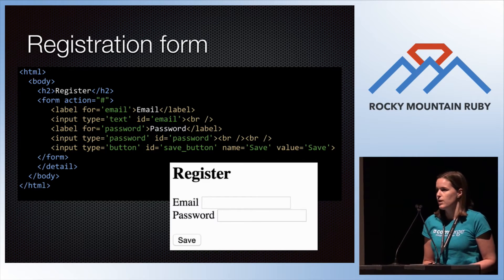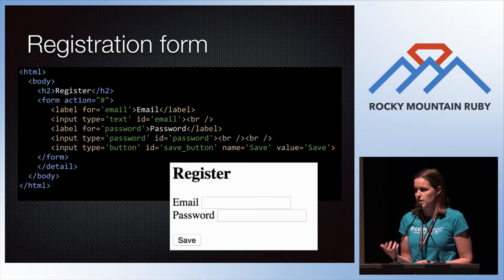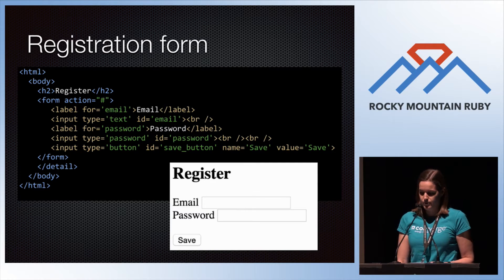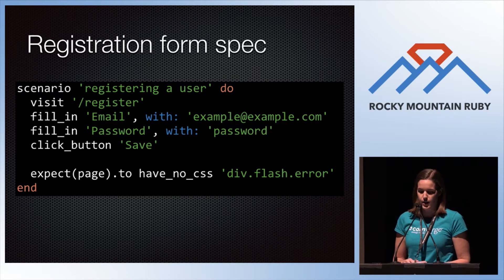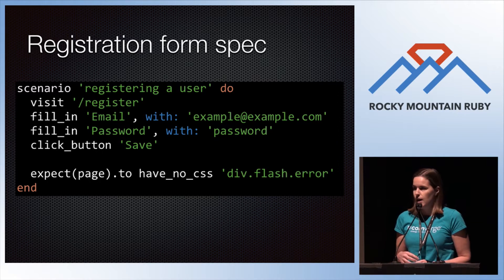I'm going to be going through an example with a simple registration form. There's the HTML for it, and this is what the form looks like. We'll say that this is for a shopping app. Your first stab at a spec for this might look like this: you're registering a user, using Capybara's methods — visit, fill_in email, fill_in password, click_button save — and expect there not to be an error.